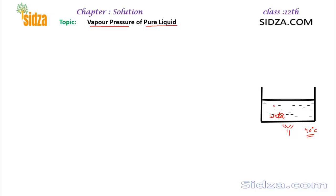At any particular temperature, some of the liquid molecules will gain kinetic energy and enter into the vapor state. If the vessel is open, the vapors will go into the atmosphere. But if you close the vessel, all the vapor molecules will remain above the surface of the liquid.